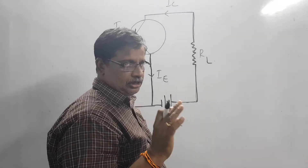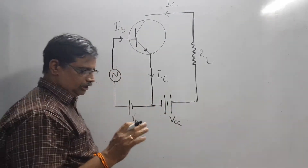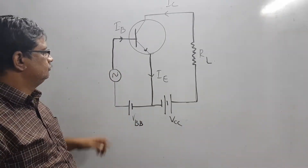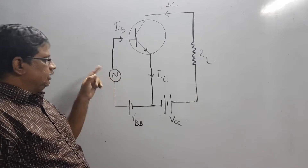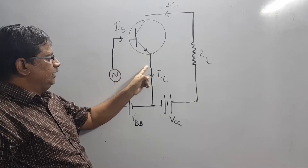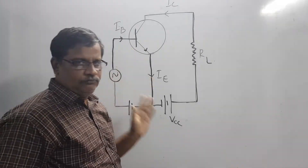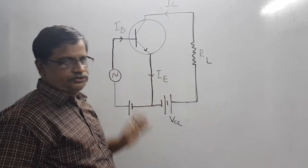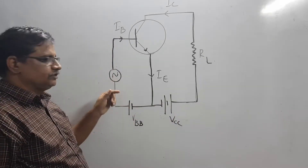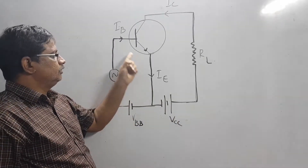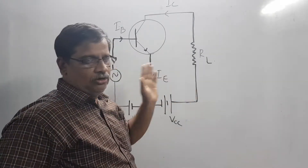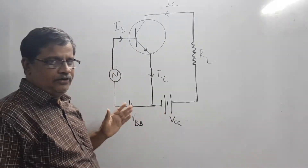This battery has a very important role: it ensures the proper flow of zero signal collector current. If there were no battery and you applied only the signal at the input, during the positive half-cycle the base-emitter junction would be forward biased and current would flow through the load resistor. But during the negative half-cycle, the junction would be reverse biased, resulting in no current — so we would not get a properly amplified output.